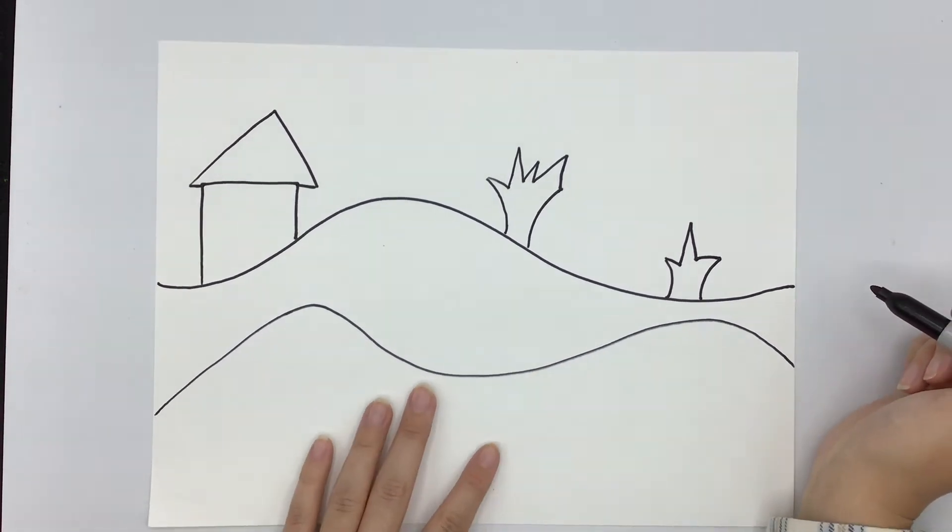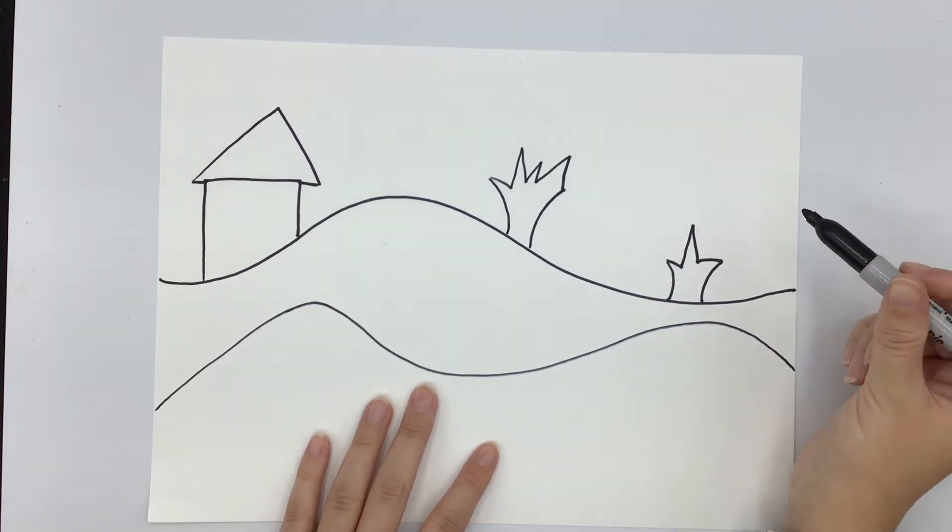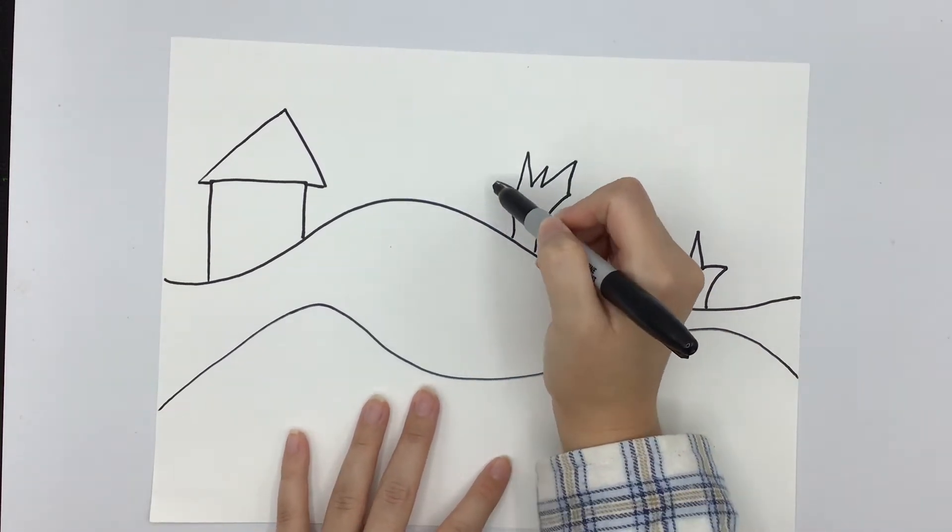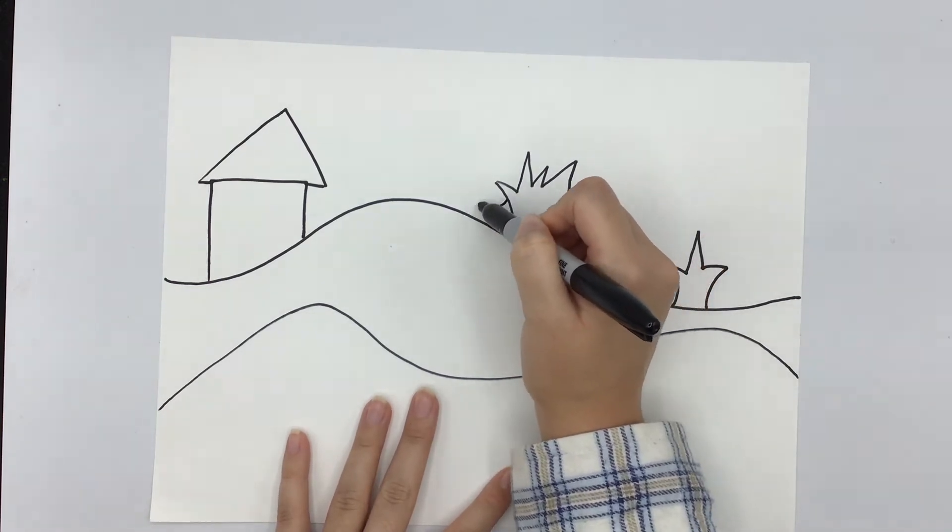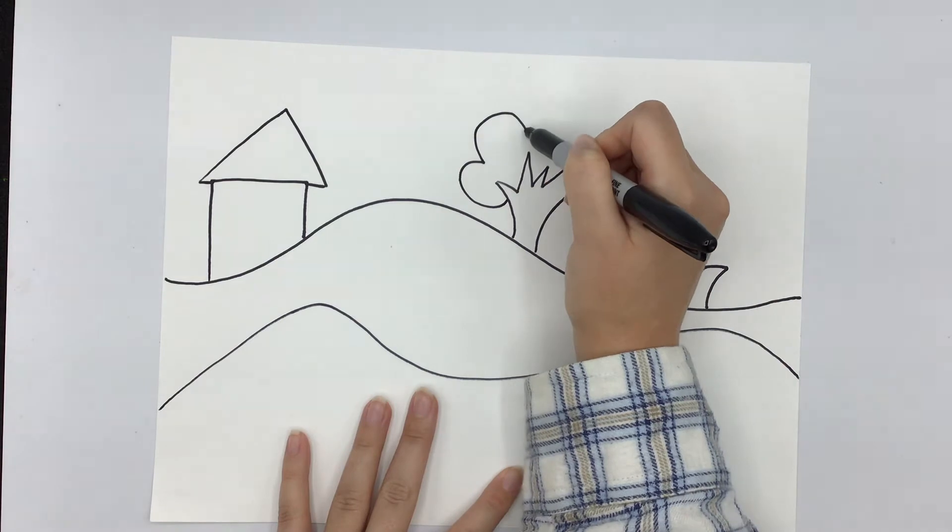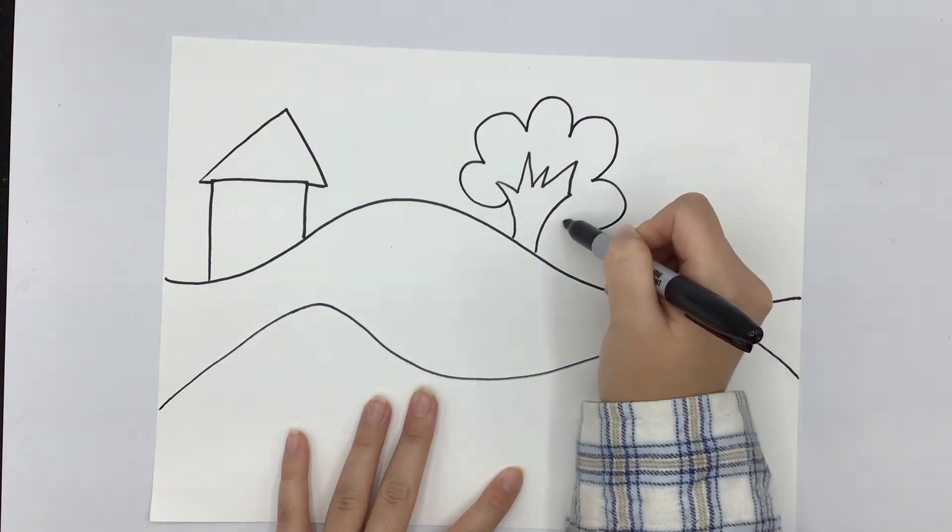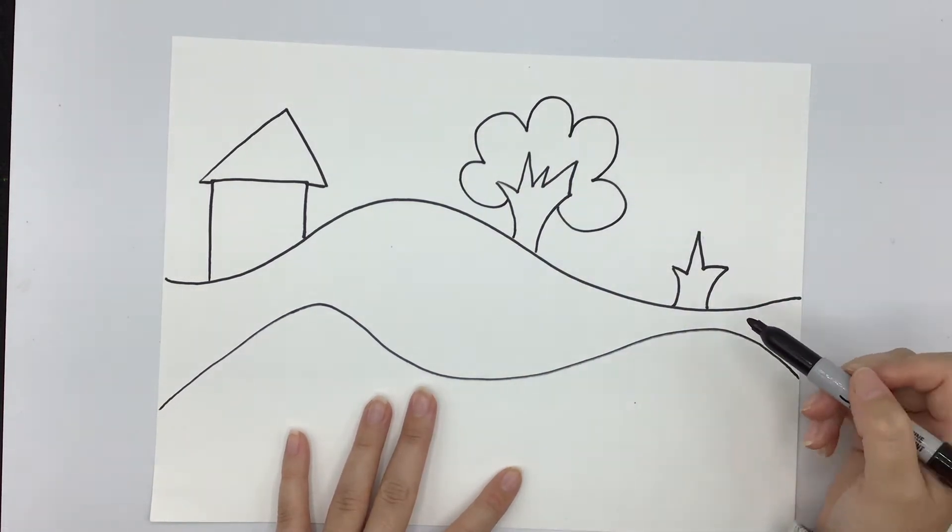Now those don't really look like trees yet. We need to add our leaves. So to add our leaves of our trees, I'm going to make a jumping line that jumps all the way around my tree trunk. Jump jump jump jump jump jump jump.